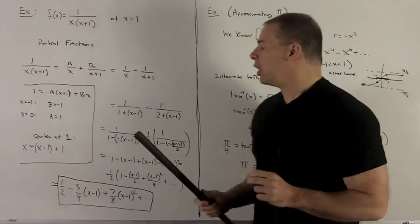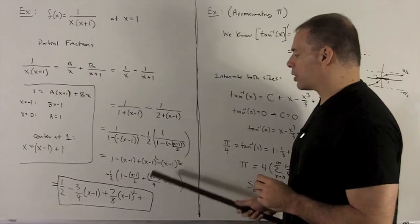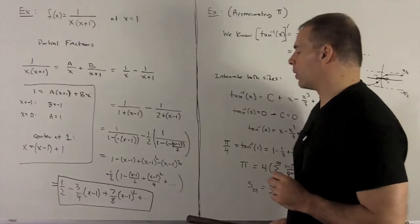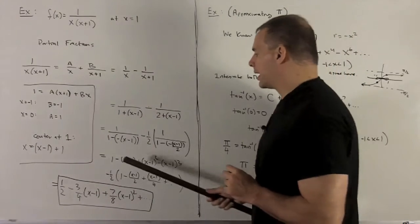We're allowed to do that if we do it term by term. So the way we deal with series, all you're going to do is match up your powers of x if you want to combine things, or in this case, powers of x minus 1.